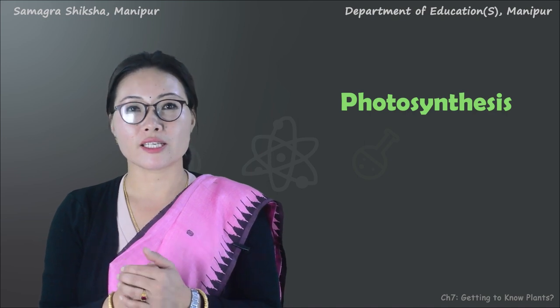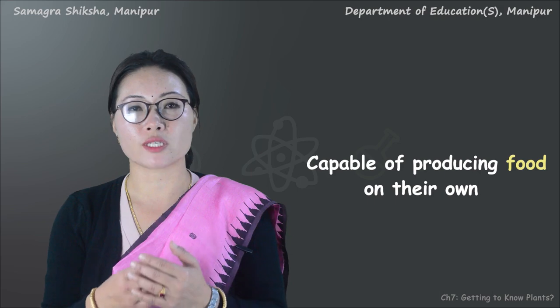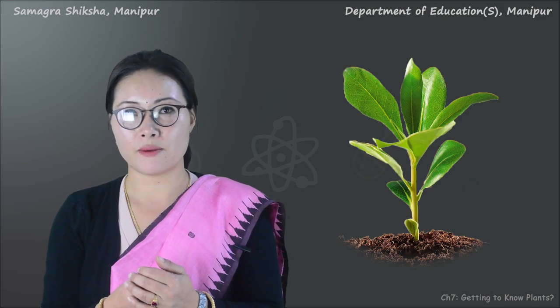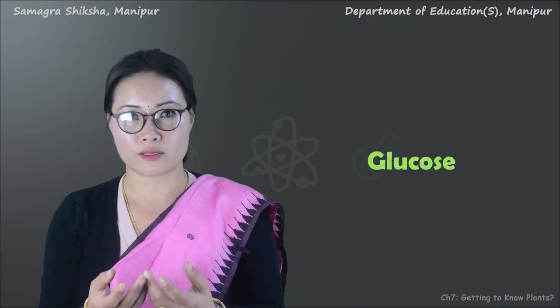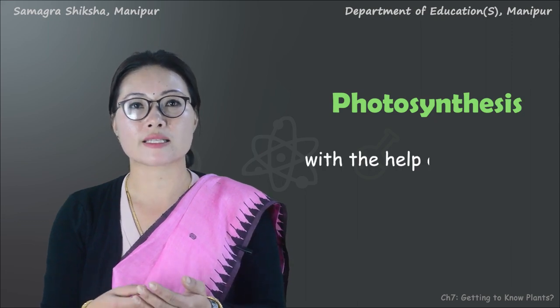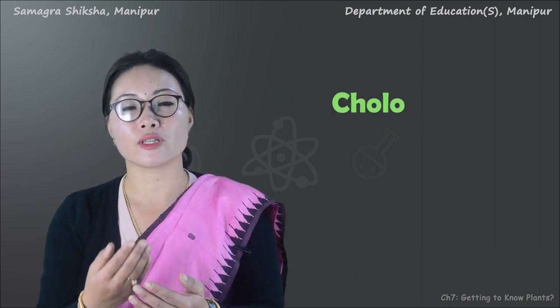The main function of the leaf is also photosynthesis. Plants are autotrophs — they carry out the process of photosynthesis using sunlight, carbon dioxide from the atmosphere, and water, to produce glucose. Photosynthesis uses chlorophyll, a green pigment found in the leaves.